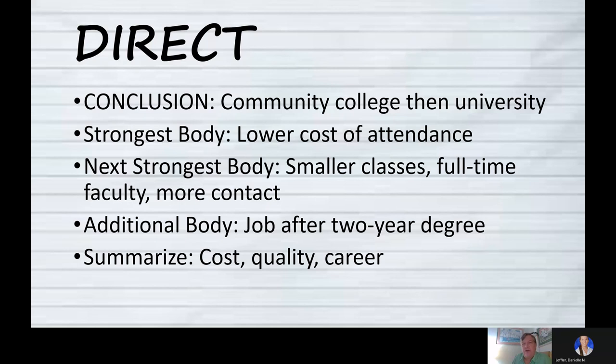So here would be my outline in direct order. And my conclusion is first community college, then the university. I know I have a kind of friendly or at least interested audience, so I can go ahead and say my position right at the beginning. Strongest piece of my body evidence would be the lower cost because money is always a powerful topic. Then the next strongest thing, community college, you would have smaller classes, you'd get full time professors, you might have more contact with your professors. So the school part might be better. The additional body, even after a two year degree, you could find some good jobs. As we said last time, nursing, public safety, things like that. And then in conclusion, I'll just summarize and remind people I talked about cost, I talked about quality, and I talked about career possibilities.